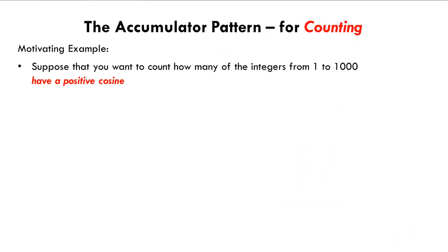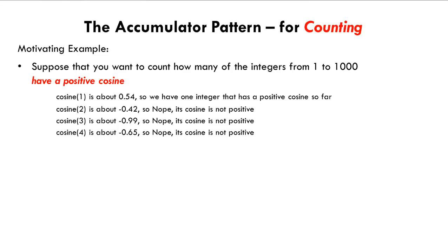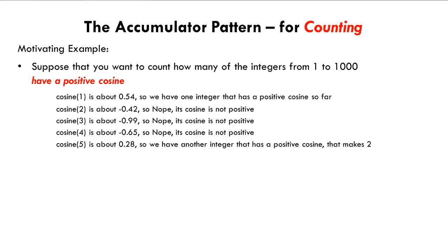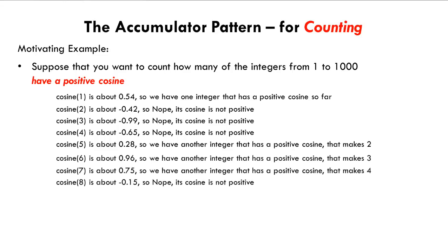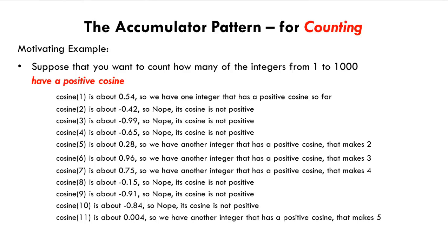Now let's turn to the counting form of the accumulator pattern. For example, let's count how many of the integers from 1 to 1000 have a positive cosine. Cosine of 1 is about 0.54, so we have one integer so far that has a positive cosine. Cosine of 2 is about negative 0.42, its cosine is not positive. Cosine of 3 is about negative 0.99, not positive. Cosine of 4 is negative. Cosine of 5 is about 0.28, so we have another integer with a positive cosine, that makes 2. Cosine of 6 is positive, that makes 3. Cosine of 7 is positive, that makes 4. Cosine of 8, 9, and 10 are negative. Cosine of 11 is just barely positive, that makes 5, and so forth.